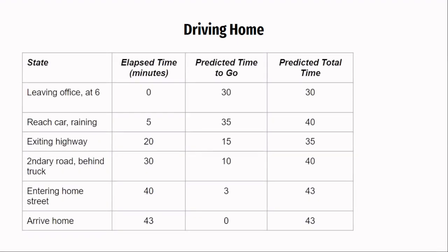Let's say you are driving home from work and trying to predict how long it will take to reach home. You leave the office at 6 o'clock and estimate it will take 30 minutes. As you reach your car, it starts to rain, so you predict 35 minutes. After 20 minutes on a fairly empty highway, you exit and estimate 15 minutes more. You then get stuck behind a slow truck, and predict 10 more minutes. At 6:40, you enter your home street and predict 3 more minutes. You arrive home at 6:43, meaning it took 43 minutes total, as opposed to your early prediction of 30 minutes.